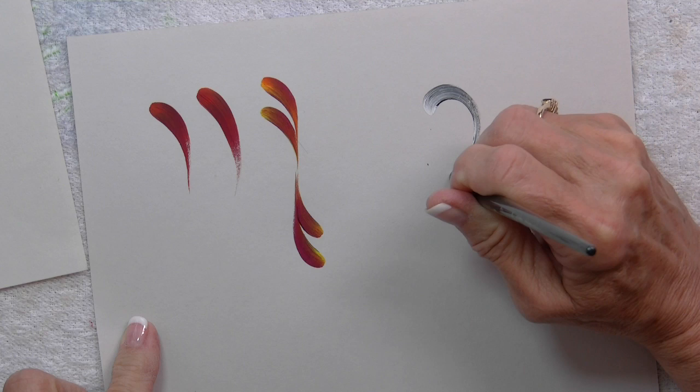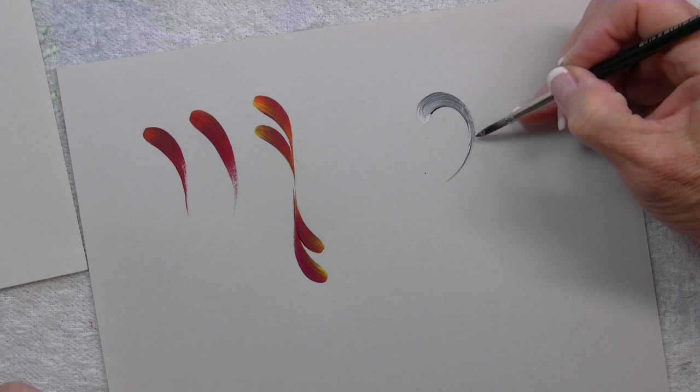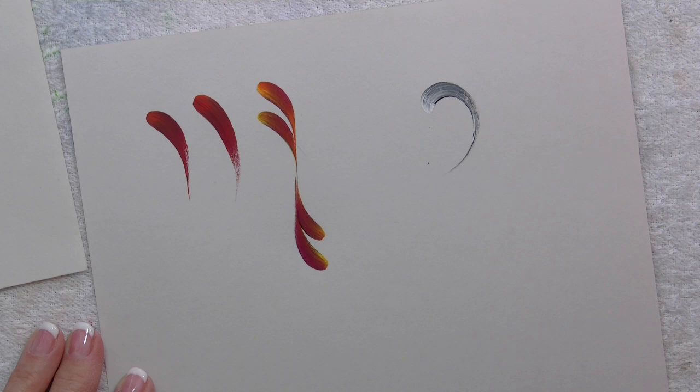If you don't have enough paint on your brush, you're going to see this little airy stuff. On a regular stroke that would bother me, but on this one we're going to be covering it up because we're going to be layering up more tail feathers.